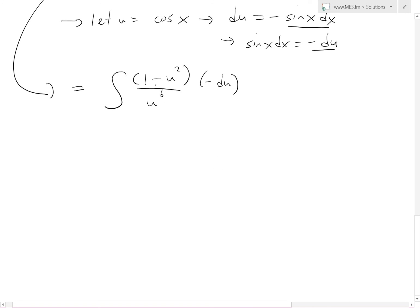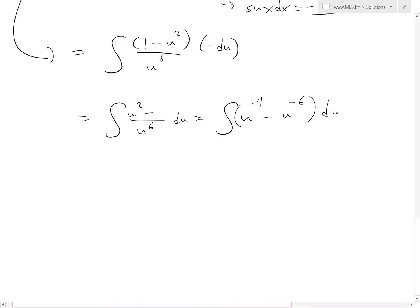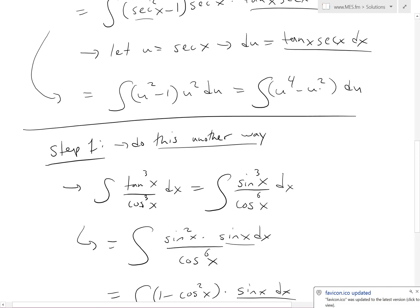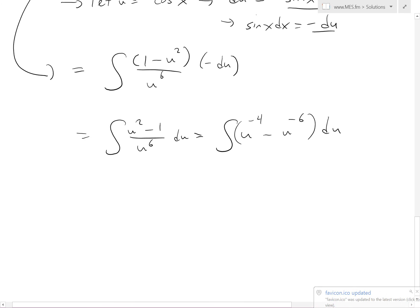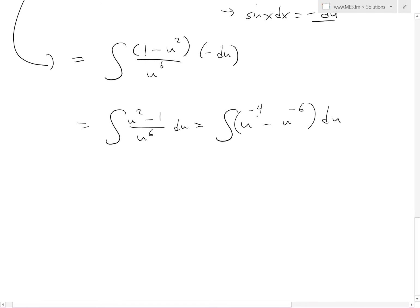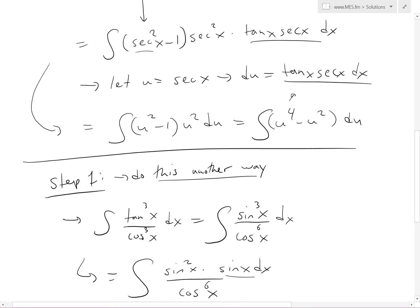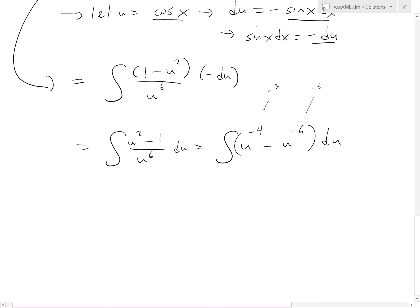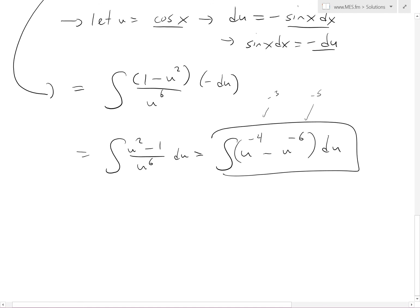Multiplying the negative inside, we get (u² − 1) / u⁶ du, which equals u⁻⁴ − u⁻⁶ du. Now these look slightly different from the first method where we had u⁴ − u², but since in this case u = cos x and we have negative powers, when we integrate we add one: −4 becomes −3, and −6 becomes −5. And since cosine to a negative power becomes secant, these two results are exactly the same — you could work that out yourself.